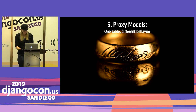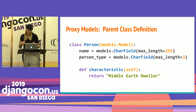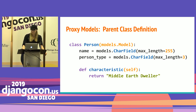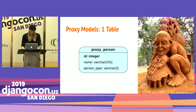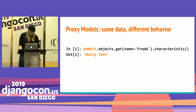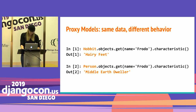Last but not least, we have proxy models. The purpose of proxy models is to override the behavior and functionality of the parent class — we have exactly one table to rule them all. For example, everyone in Middle Earth is a person: our parent class has a name, a person type, and a method called characteristic that returns 'Middle Earth dweller'. Hobbit subclasses person, sets proxy to true on the meta class definition, and defines characteristic to return 'hairy feet'. There's one precious table no matter how many subclasses you add, and accessing via Hobbit returns 'hairy feet' while accessing via person returns 'Middle Earth dweller'.